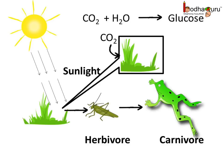The animals depend on plants for food directly or indirectly. The herbivores are the plant-eating animals, so they eat the plants directly. The carnivores generally eat the herbivores, which are dependent on the plants for their food. So other animals are dependent on plants indirectly. The plants absorb nutrients like calcium, iron, nitrogen, etc. from the soil, which goes into all the animals that eat them directly or indirectly.